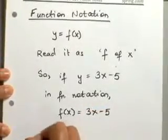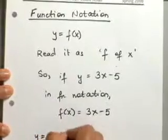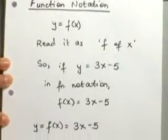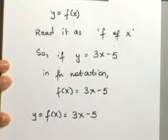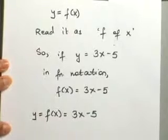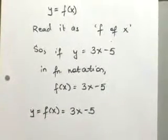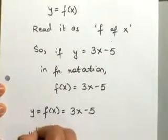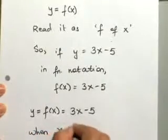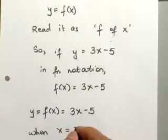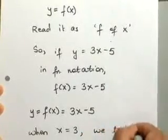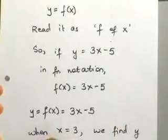Basically, you have y that equals f of x, and y equals 3x minus 5, so f of x equals 3x minus 5. If we were trying to find the values of y — if we wanted to use, let's say, when x equals 3 — you can find y, or now as we're calling it, f of x.